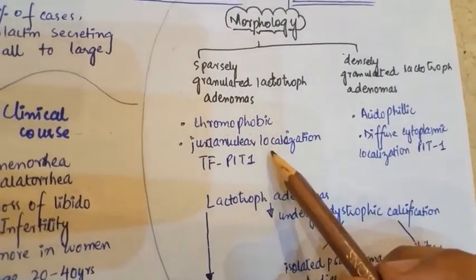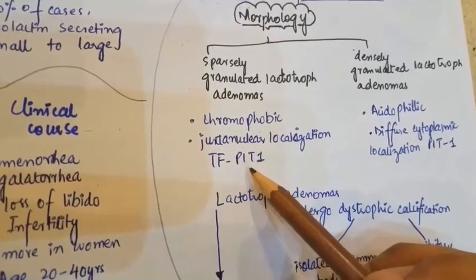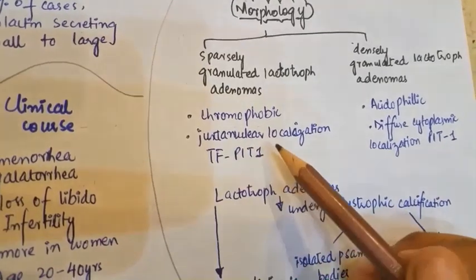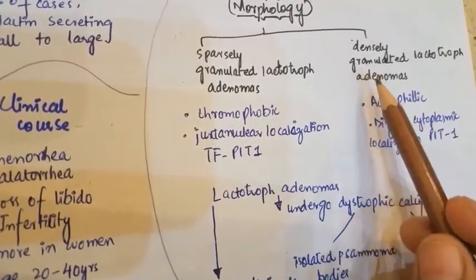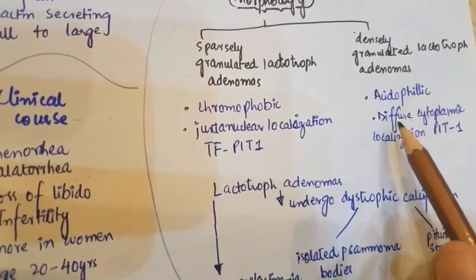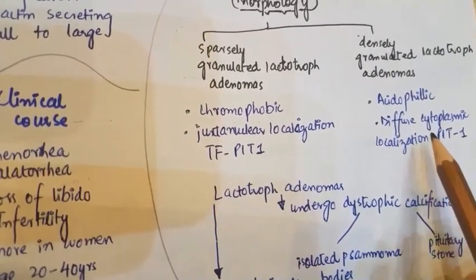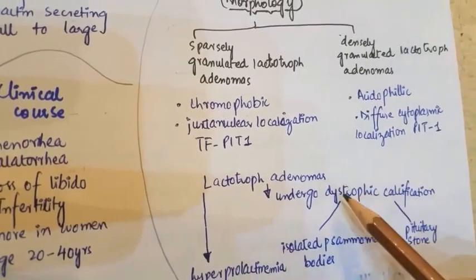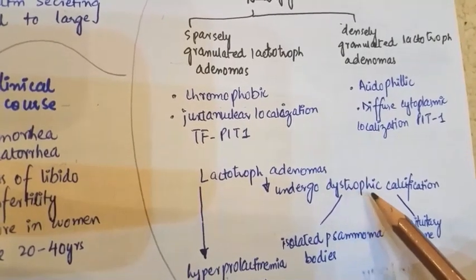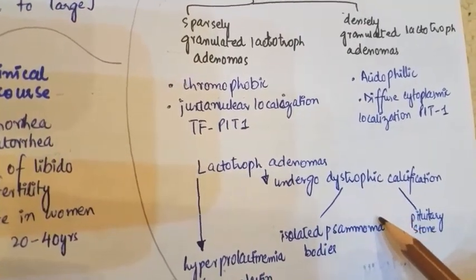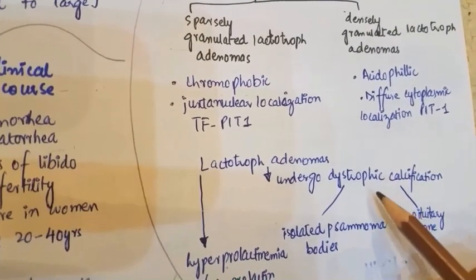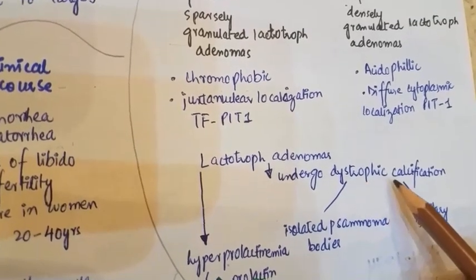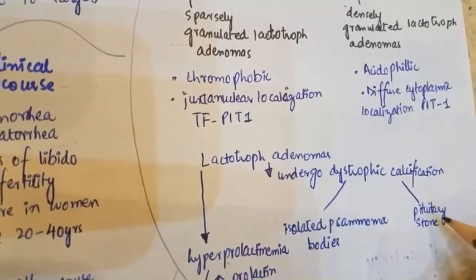There is another difference: the transcription factor Pit1 will be present along with the nucleus in sparsely granulated lactotroph adenomas, whereas in densely granulated lactotroph adenomas, Pit1 transcription factor will be diffusely localized in the cytoplasm. Lactotroph adenomas undergo dystrophic calcification; with small calcification there will be isolated psammoma bodies, and when extensively calcified they will form pituitary stones.